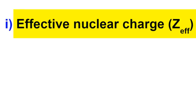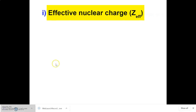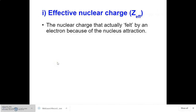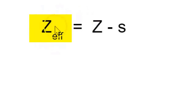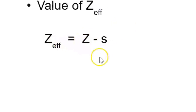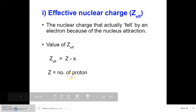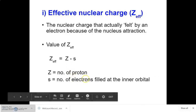Let us see how effective nuclear charge affects the size of the atom. Effective nuclear charge is the nuclear charge actually felt by an electron due to nucleus attraction. The value of effective nuclear charge is determined by the formula: effective nuclear charge equals Z minus S,